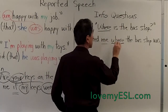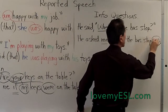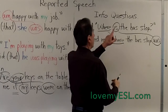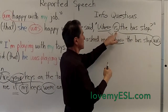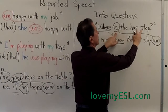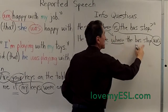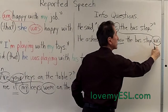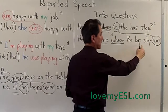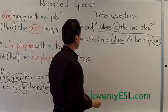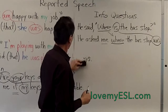'Where' doesn't change — it stays 'where.' 'Is' does change: 'is' became 'was.' But notice it is not an inversion. 'Where is the bus stop' — in the question, 'is' comes before 'the bus stop.' But here, 'the bus stop' is the subject, so 'was' comes after it. This is not an inversion — the subject is before the verb. No question mark at the end, of course, because this is no longer a question.